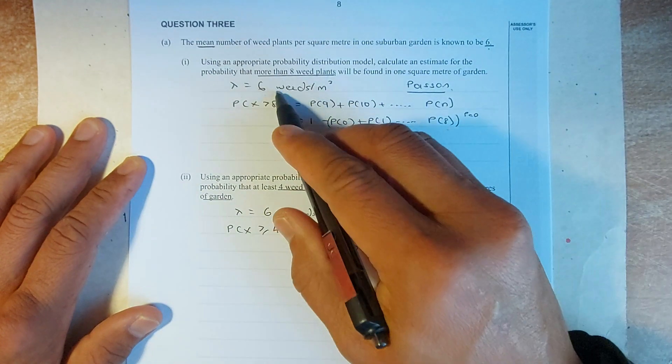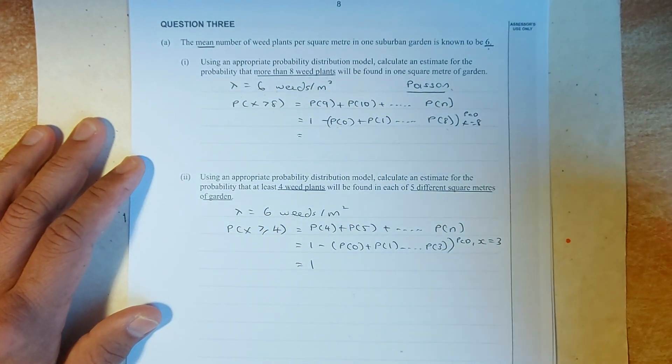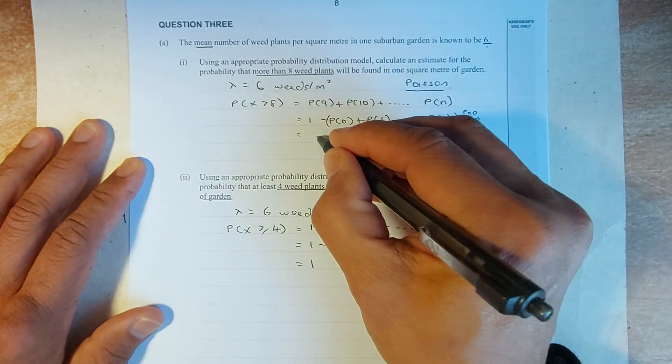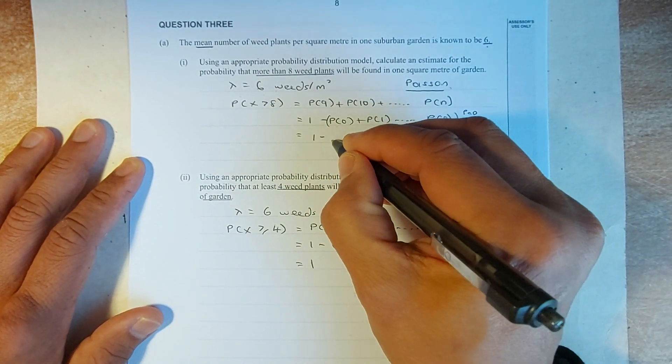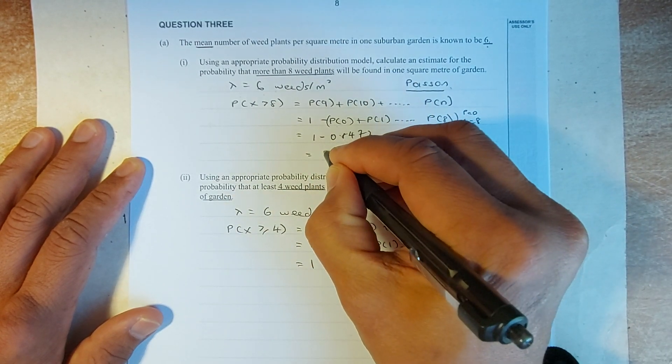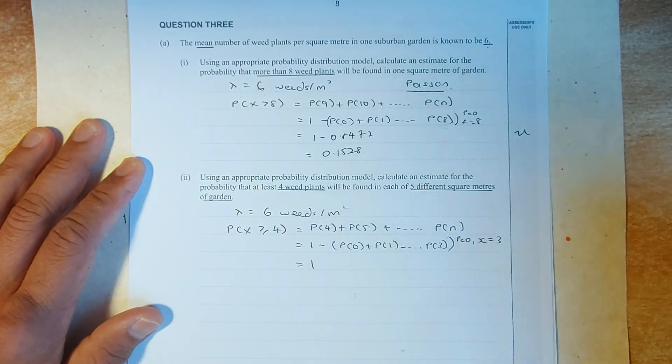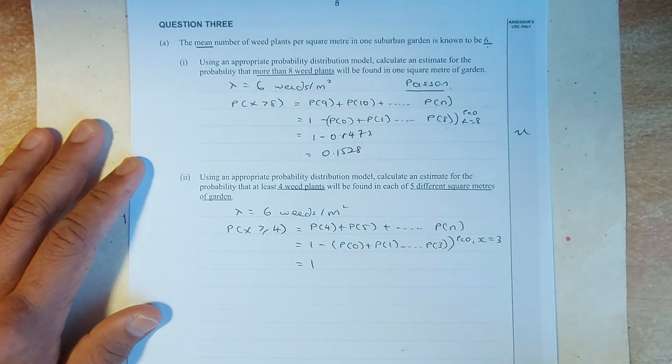Your lambda is 6. Your x is 8. And then put in your calculator. And the answer is going to be 1 minus 0.8472. And the answer you'll get is 0.1528. And that is a simple achieve. Okay, next one.